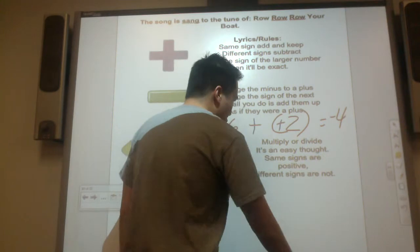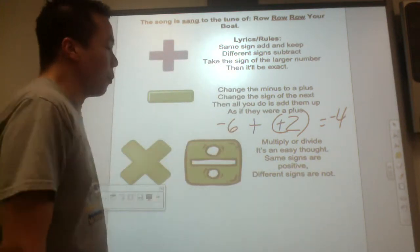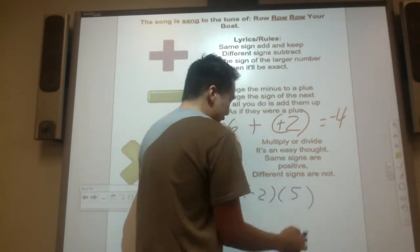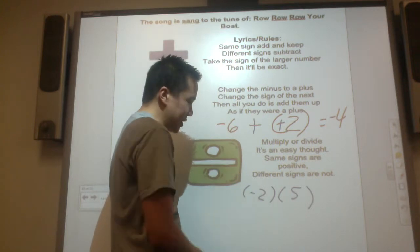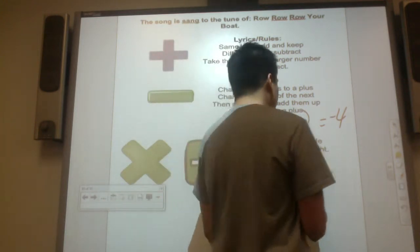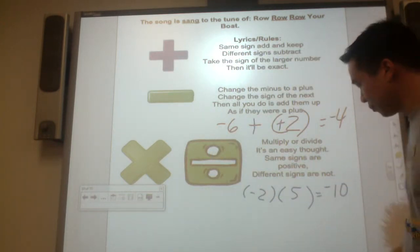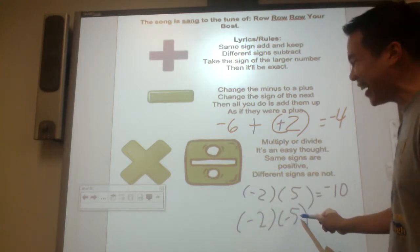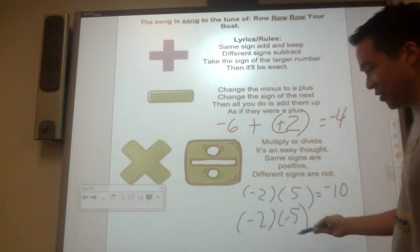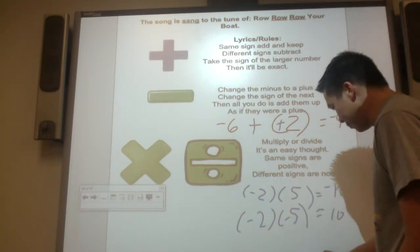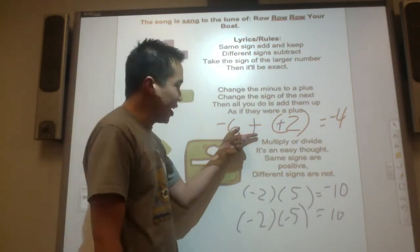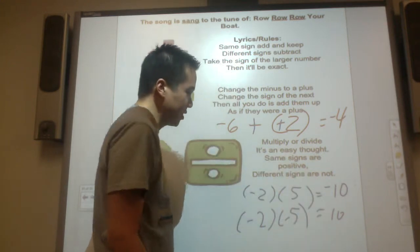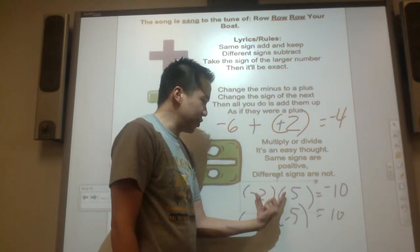For multiplying and dividing, one rule covers both operations. The song goes: 'Multiply or divide is an easy thought — same signs are positive, different signs are not.' So negative 2 times 5: different signs, so the answer is negative 10. And negative 2 times negative 5: same signs, so two groups of negative 5 is negative 10, and the opposite is positive 10.